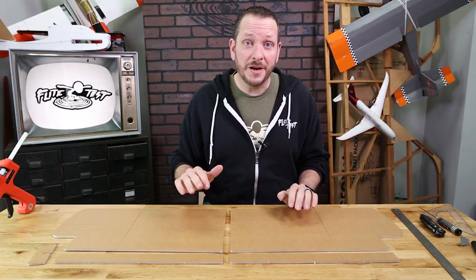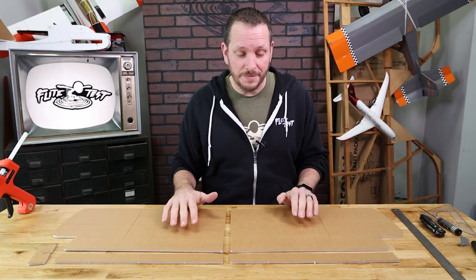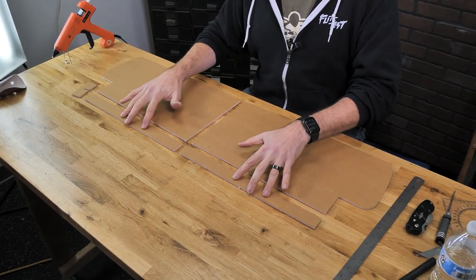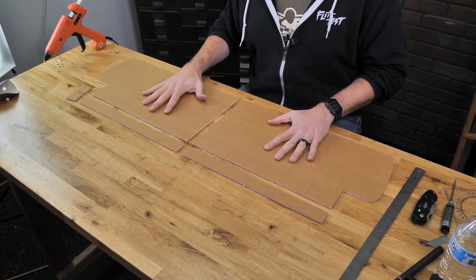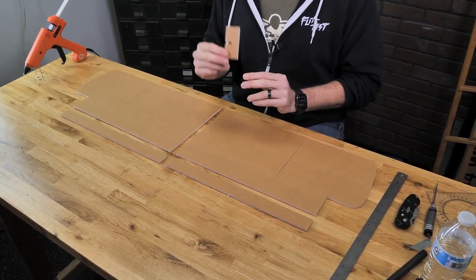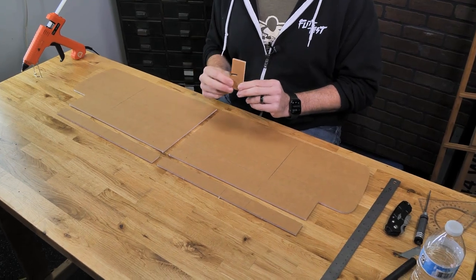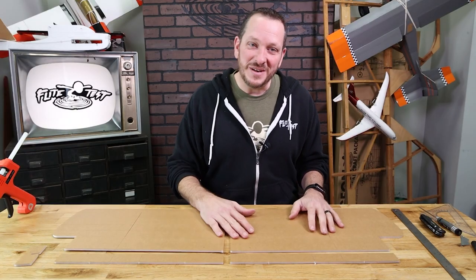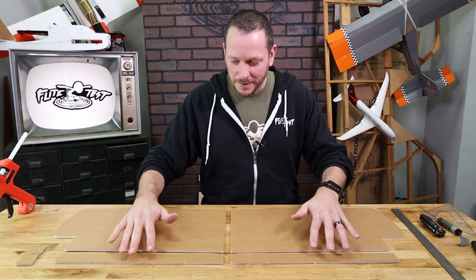So for building our primary trainer wing, we're going to need these five components. We're going to have our two main spars, our primary wing panels, and this dihedral gauge. You're going to notice it has T for trainer. Make sure you have this one, not the one that's labeled S. Now, before we get started, let's go ahead and start with our bevel cuts here on our primary wing panel.